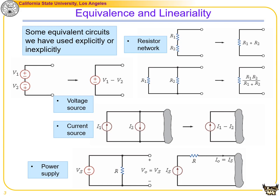Two power supplies are equivalent if they provide the same effect in a circuit. For example, if we remove the load and open the circuit, measuring the voltage between the two nodes gives the open circuit voltage Voc — it should be the same for both. Similarly, connecting the two nodes and measuring the current gives the short circuit current Isc, which should also be equal.